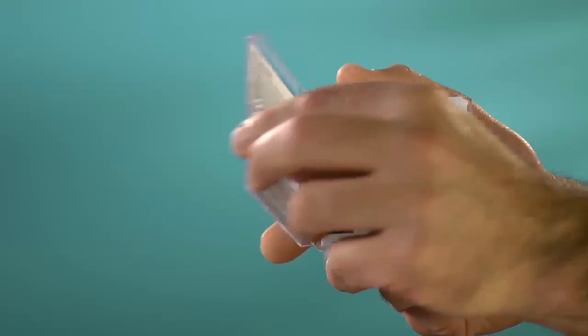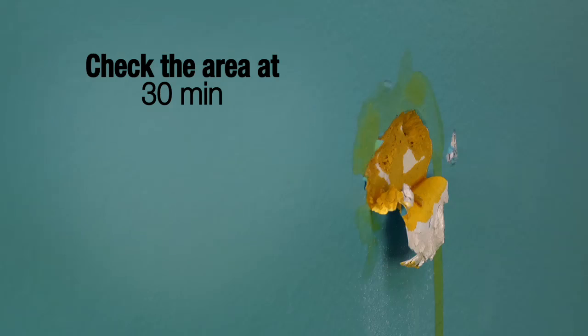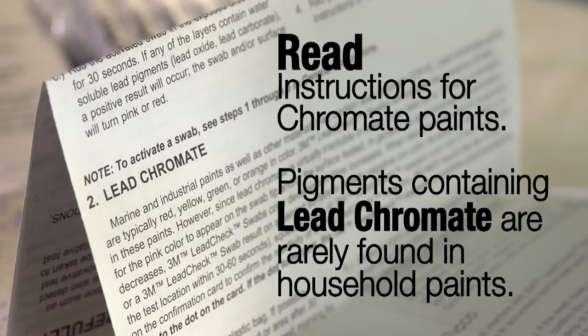Testing some industrial paints requires longer development time. Make sure to check the area at 30 minutes and again at one hour for red color development. Pigments containing lead chromate are rarely found in household paints.